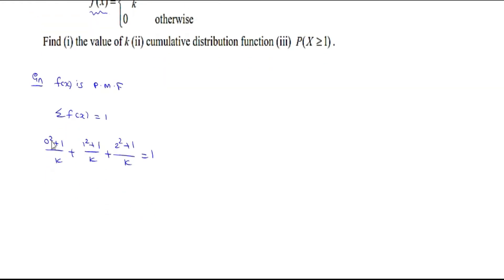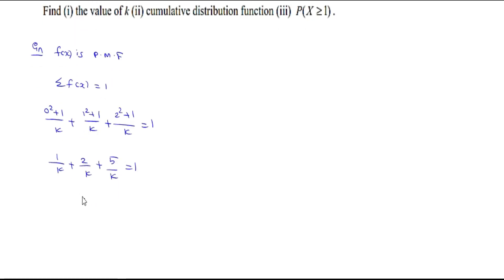Simplifying: 0 + 1 = 1, so 1/k; 1² + 1 = 2, so 2/k; 2² + 1 = 5, so 5/k. Adding the numerators with the same denominator: (1 + 2 + 5)/k = 8/k = 1. By cross multiplication, therefore k = 8.